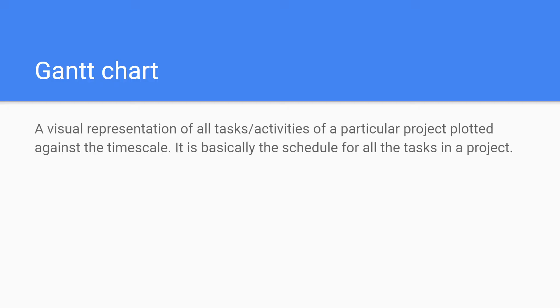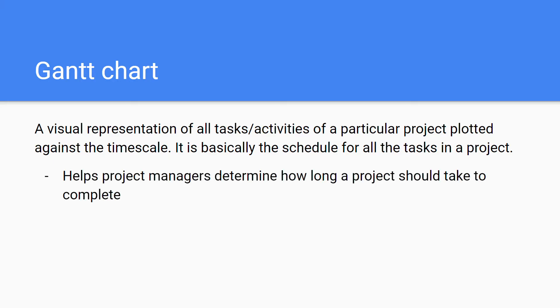So about the Gantt chart, it's a visual representation of all activities and tasks of a particular project plotted against a time scale. So it is basically the schedule for all the tasks in a project. This helps project managers determine how long a project should take to complete.